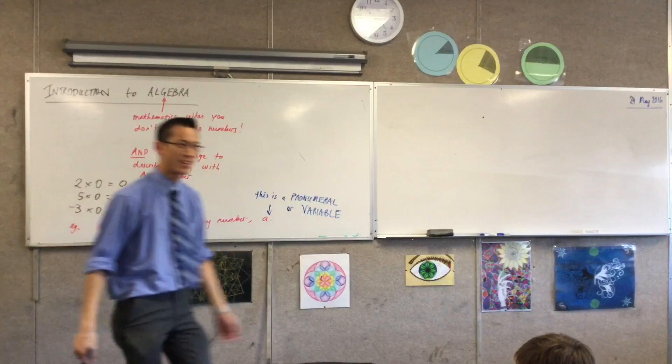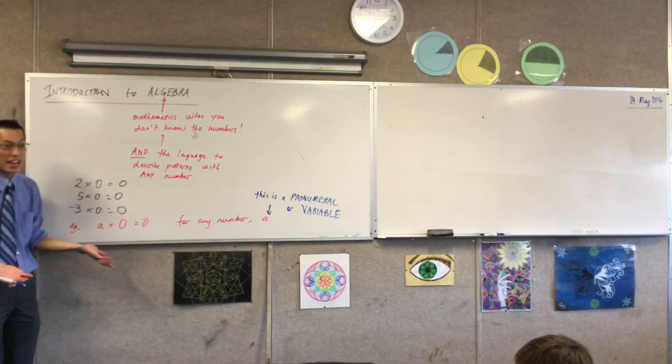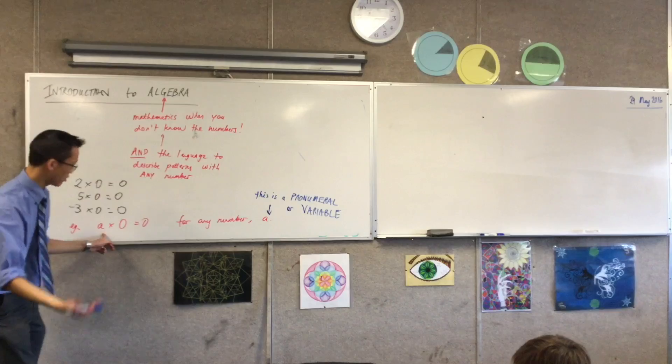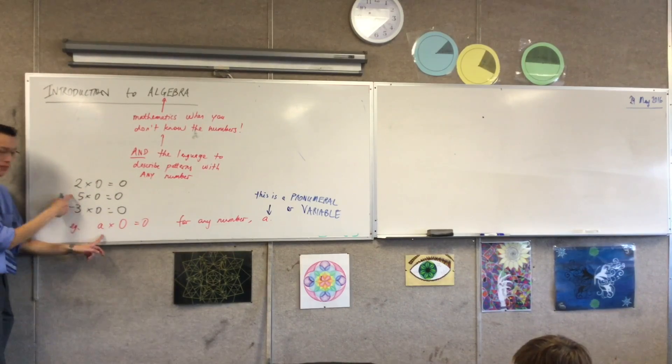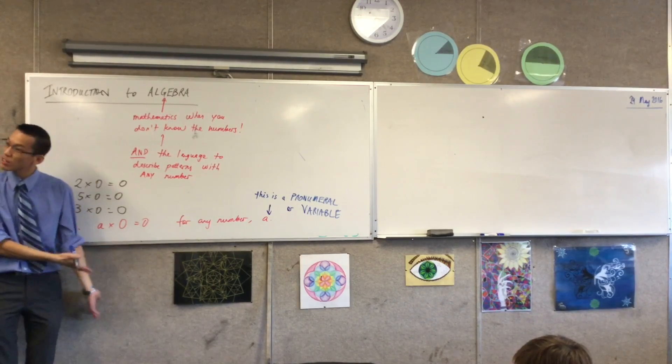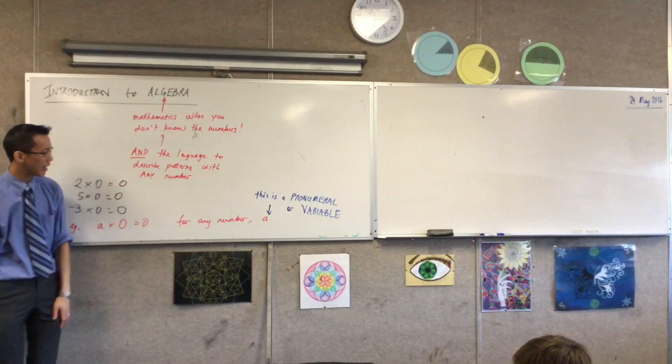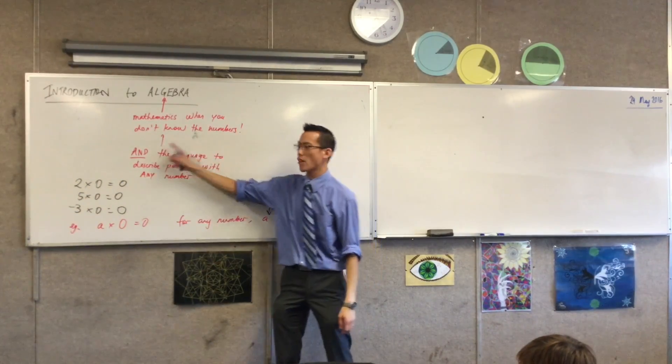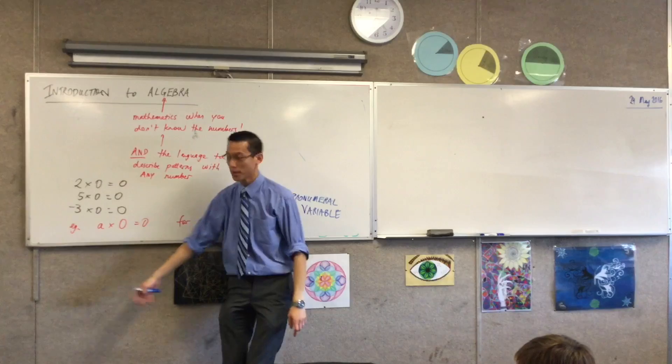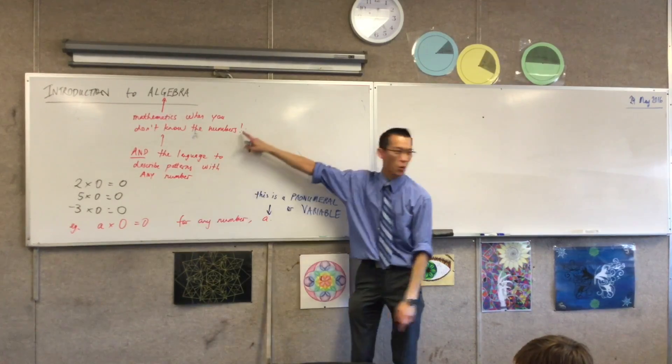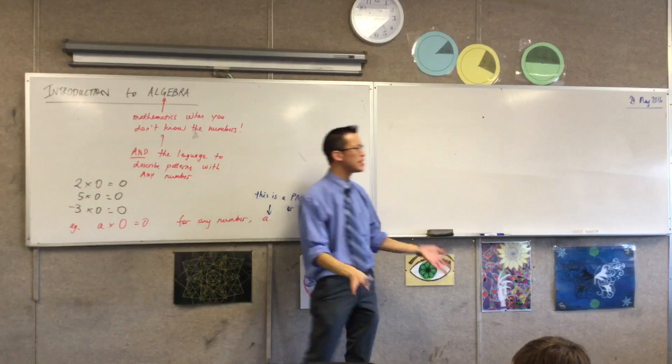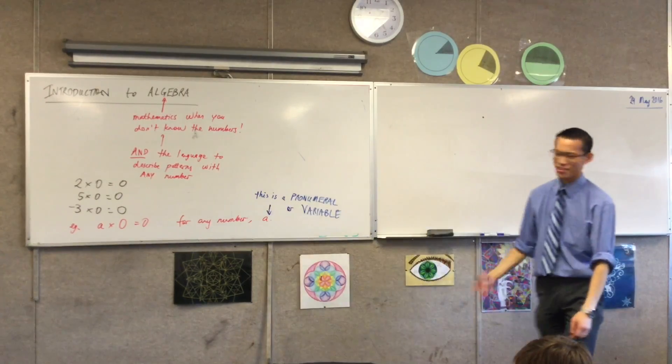Because it varies. Yeah, vary just means change, doesn't it? Right? And so here, A, I can change it to be 2, or I can change it to 5, or change it to negative 3, and it's still true. It still makes sense. So this idea here, of being able to describe patterns that are true for any number, or to be able to talk about numbers when you don't know what the numbers are, that's all algebra is. It's not scary. It's actually a really simple idea. We do it all the time.